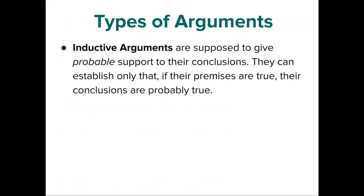One more thing about disjunctive syllogisms: remember you must deny one of the disjuncts on premise two. Saying 'either A or B; A; therefore not B' doesn't work, because it could be both A and B. It only works if you're denying one of them.